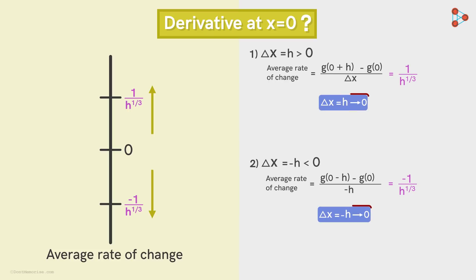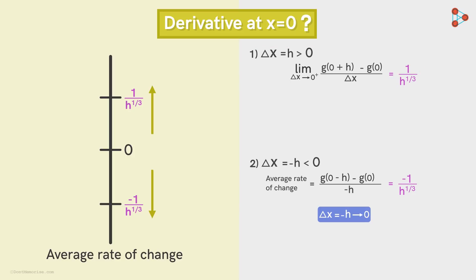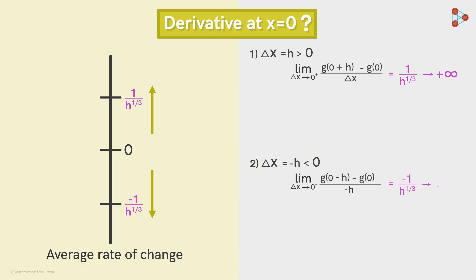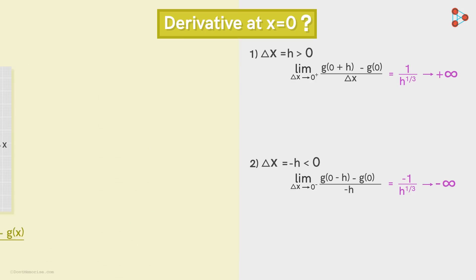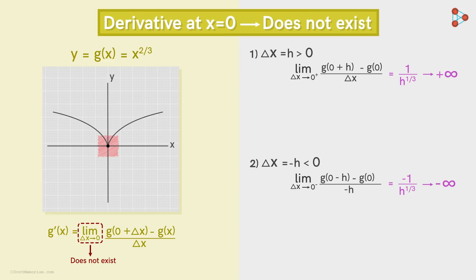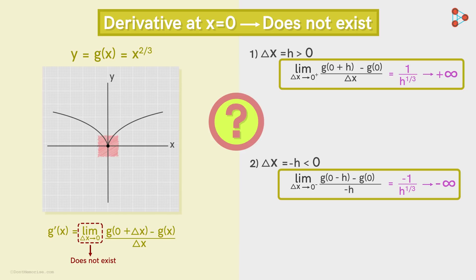So we see that as delta x tends to zero, in both cases, the average rate does not approach any particular number. In the first case, as delta x tends to zero plus, the average rate tends to positive infinity. And in the second case, as delta x tends to zero minus, the average rate tends to negative infinity. It means that in both cases, the magnitude of average rate keeps on increasing. So we can conclude that this limit of the average rate does not exist as delta x tends to zero, meaning the derivative of this function at x equal to zero does not exist. So what does all this mean geometrically?